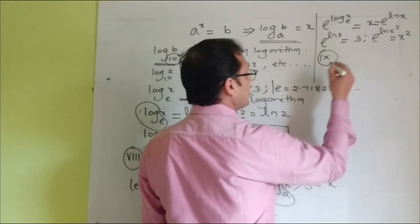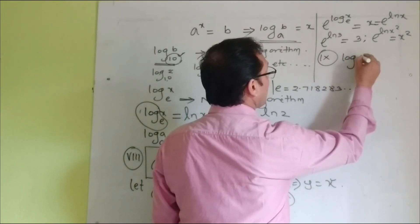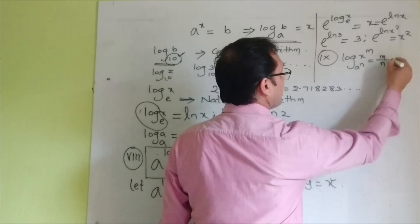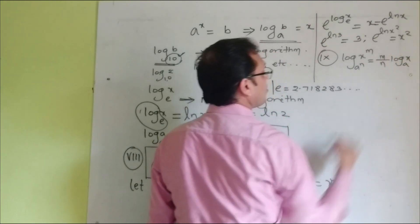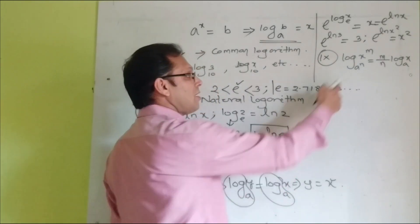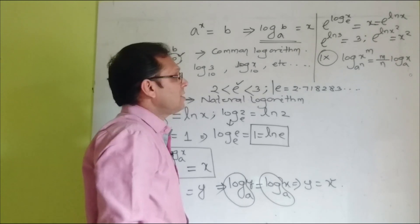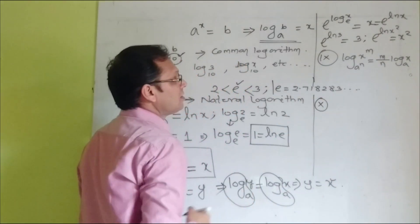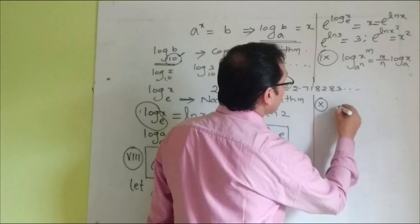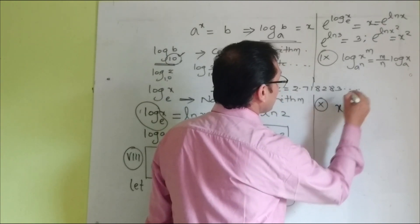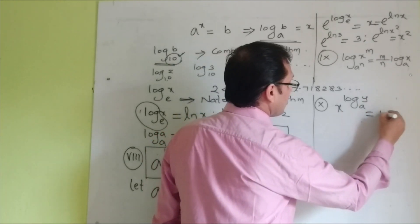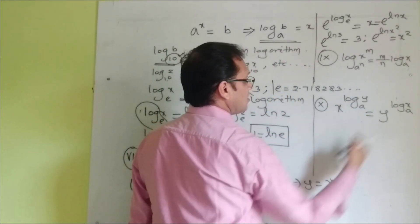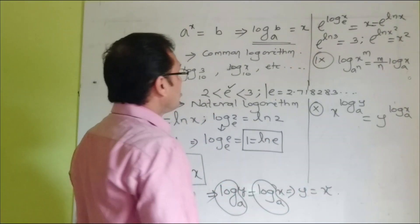The ninth rule: log x to the power m to the base a to the power n equals m/n times log x to the base a. The tenth rule: a to the power x times log y to the base a can be written as y to the power log x to the base a — the two quantities are interchanged. You can prove these rules likewise.